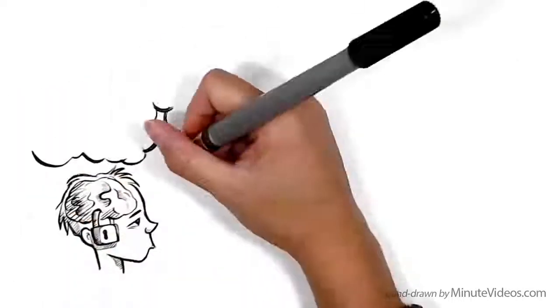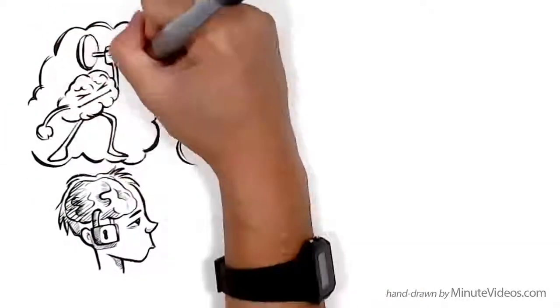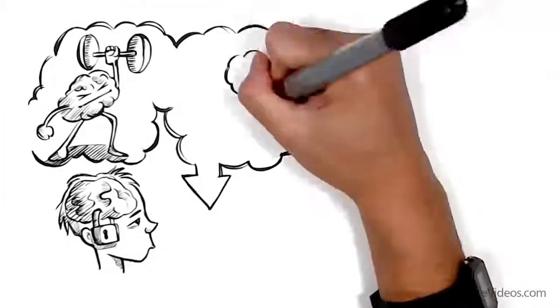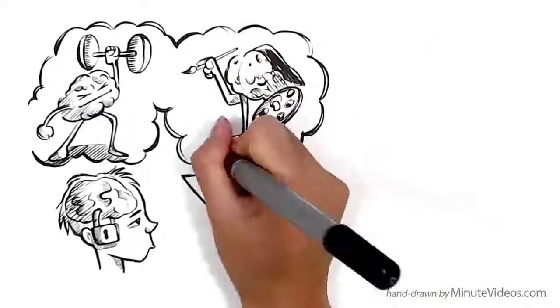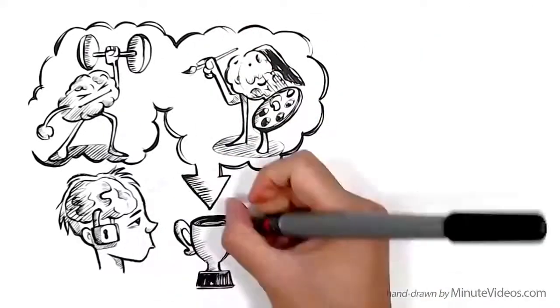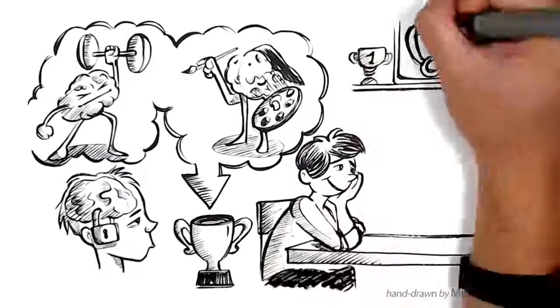People have a fixed mindset because they believe that basic qualities, like intelligence or talents, are fixed traits, and that these traits are responsible for success. They often like to document past achievements.